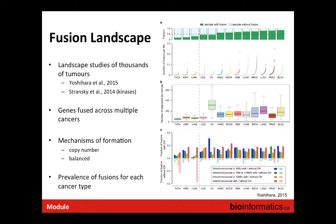Returning to landscape papers: one figure shows how genome instability is related to the number of gene fusions found in particular cancers. As a measure of genomic instability increases from left to right, the proportion of samples for which gene fusions are found also rises.